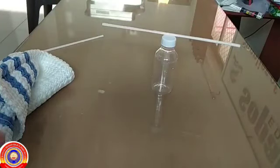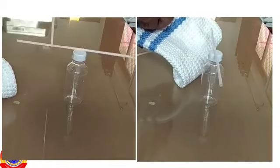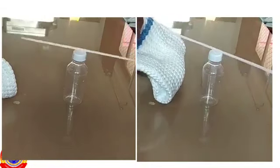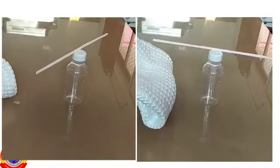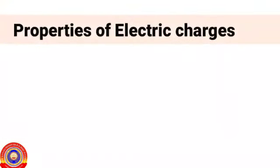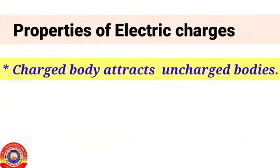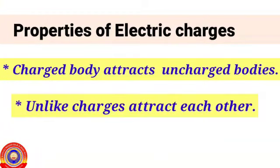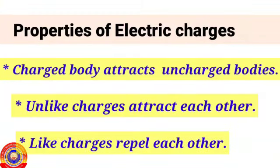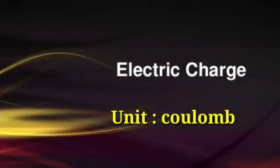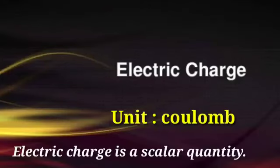A charged object can attract or repel another charged object. So the properties of electric charge are: a charged body attracts uncharged bodies; unlike charges attract each other; and like charges repel each other. The unit of electric charge is coulomb. Electric charge is a scalar quantity.